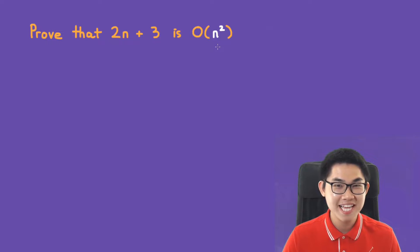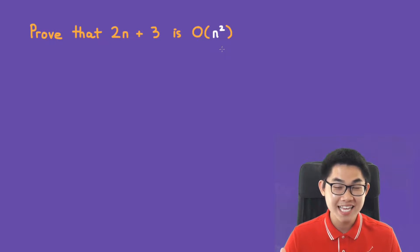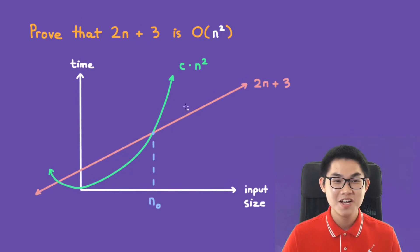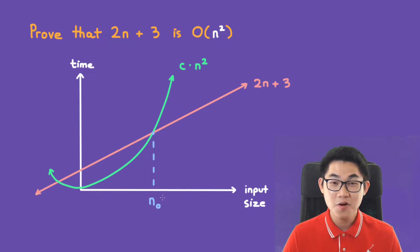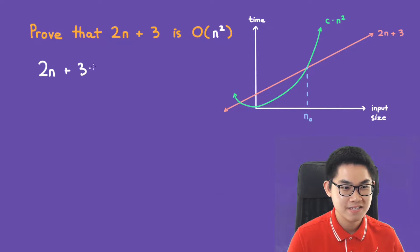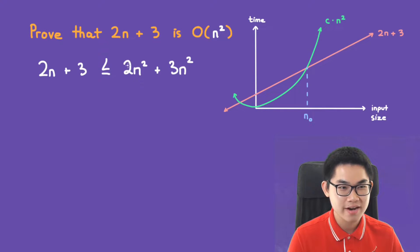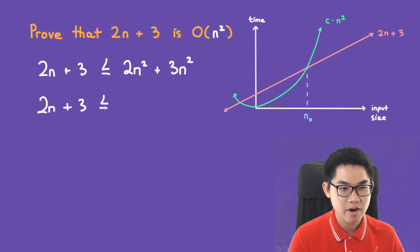Prove that 2n plus 3 is O(n²). You might say: we just showed it is O(n), how can it also be O(n²)? The answer is yes it can be. To show this, we find a function c times n² that grows faster than 2n plus 3 starting from n naught. We know 2n plus 3 is less than or equal to 2n² plus 3n², because 2n² is larger than 2n and 3n² is larger than 3. So 2n plus 3 is less than or equal to 5n².